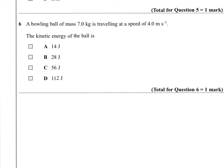So question 6 then. A bowling ball of mass 7 kilograms is travelling at a speed of 4 metres per second. The kinetic energy of the ball is one of these values. So we remind ourselves that the kinetic energy of an object is a half times M times V squared, which is a half times 7 times 4 squared. And that comes out to be 56 joules, which is answer C.